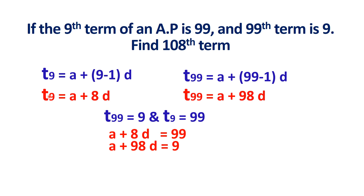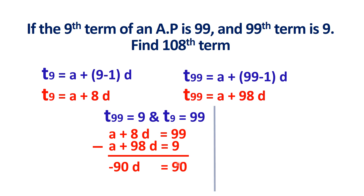We subtract the second equation from the first. A minus A is 0, and 8D minus 98D gives minus 90D, while 99 minus 9 equals 90. So D equals minus 90 divided by 90, giving D equals minus 1. Thus we get the common difference D.